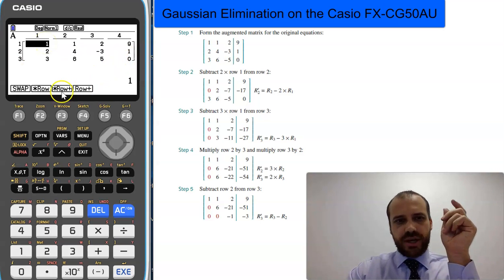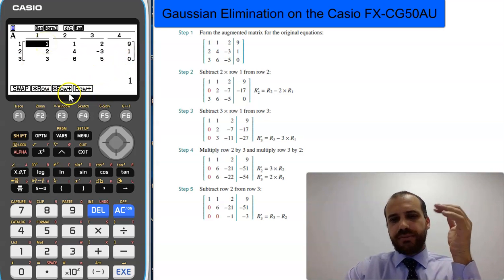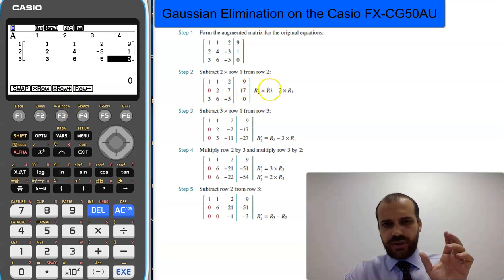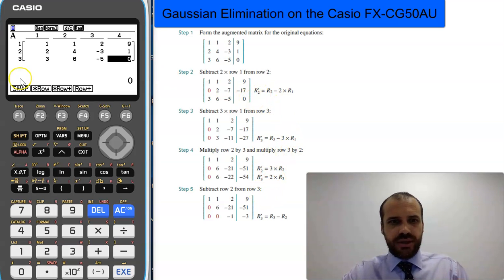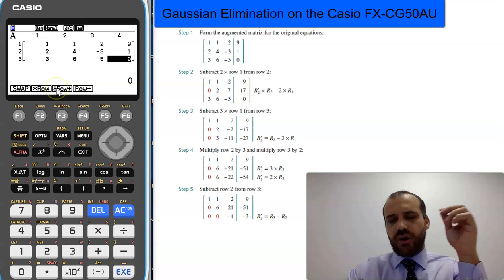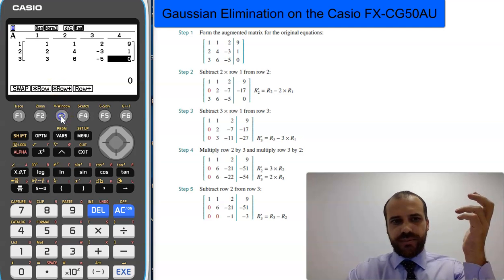Now the really interesting row operations are these ones here. They're probably the most useful, but they can be a little bit confusing. I'm going to do exactly what our actual question wants us to do. We're going to click this button here because that's going to allow us to add a multiple of a row to another row.